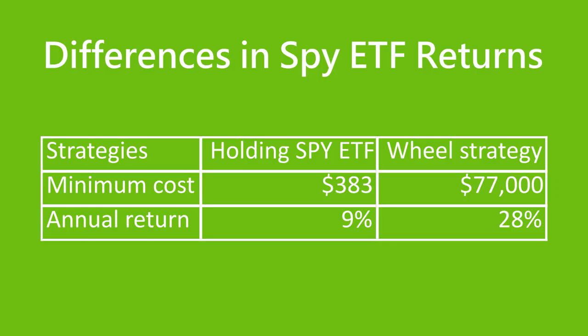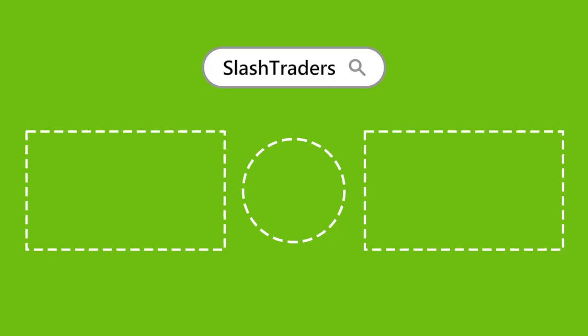If buying and holding shares of SPY can expect a 9% average return per year, then we can add 19% more from the premium of the wheel strategy, tripling our annual returns on investing in SPY. Now it's your turn to use bullish value stocks to find undervalued blue chip stocks to trade the real strategy.